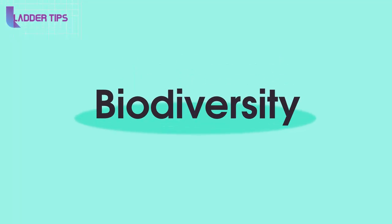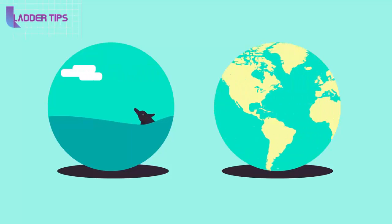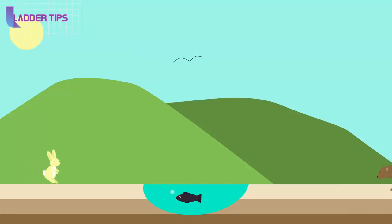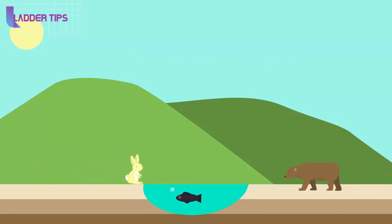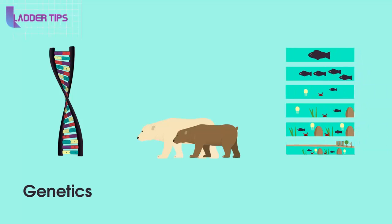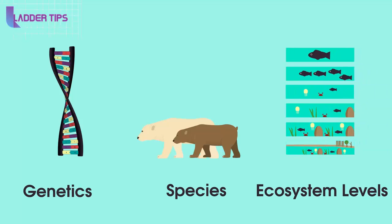Biodiversity is a key concept in ecology and has importance on both local and global scales. Biodiversity is the degree of variation of life, or put it more simply, the number of different individuals and life forms in an area. Scientists usually measure biodiversity on either genetic, species or ecosystem levels.